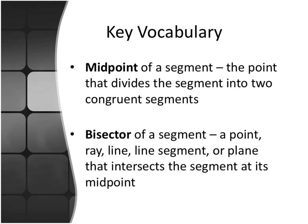Okay, again, so midpoint of a segment is the point that divides the segment into two congruent segments. And then the bisector of a segment is a point, ray, line, line segment, or plane that intersects a segment at its midpoint.